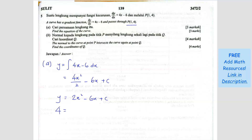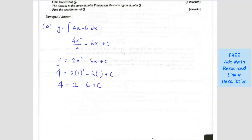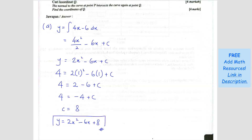So we're going to substitute: 4 equals 2 times 1 squared minus 6 times 1. We want to find C, so we get 4 equals negative 4 plus C. So C equals 8. So the equation is y equals 2x squared minus 6x plus 8. This is the answer for the first part — we have found the equation of the curve.